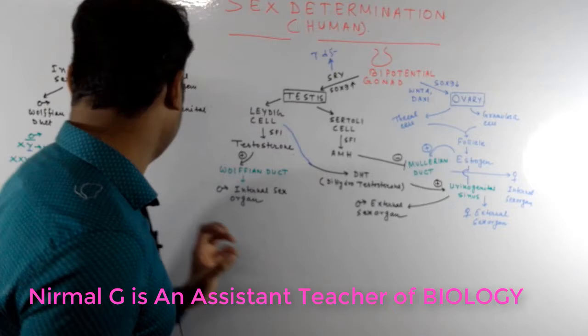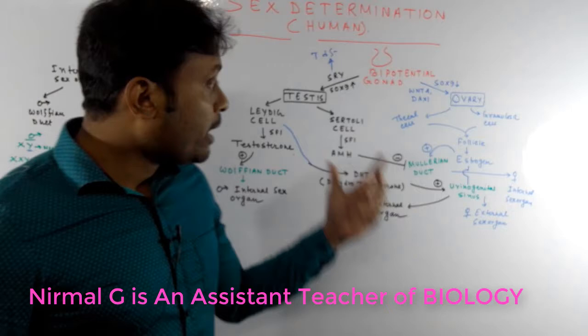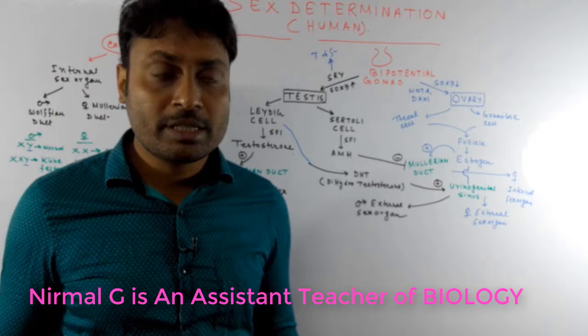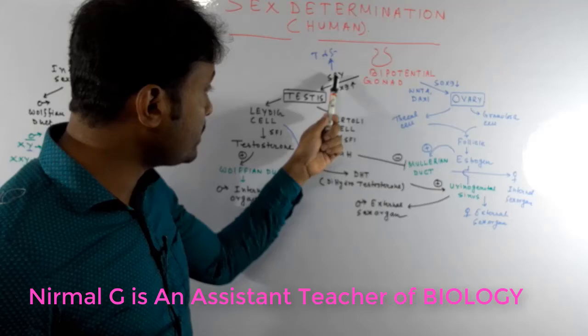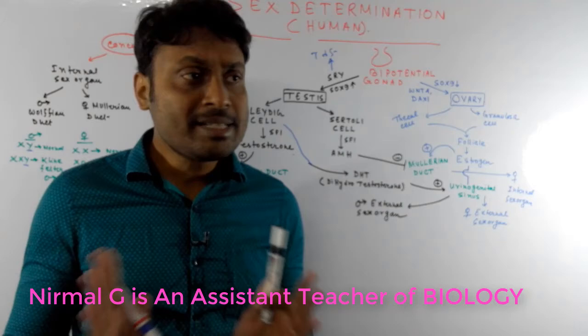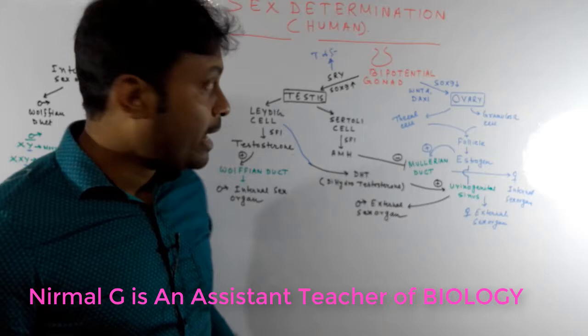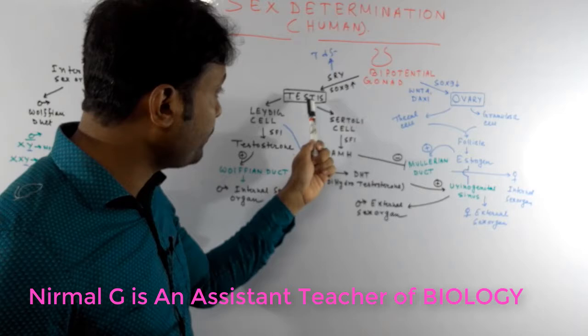Now I will explain what types of genes are responsible for the development of the Wolffian duct, Müllerian duct, and urogenital sinus. In the embryonic condition, there is a bipotential gonad — it is called bipotential because it has the potentiality to develop either into the testes or the ovary. The SRY gene, located on the Y chromosome, is responsible for the synthesis of a protein called testis-determining factor (TDF).